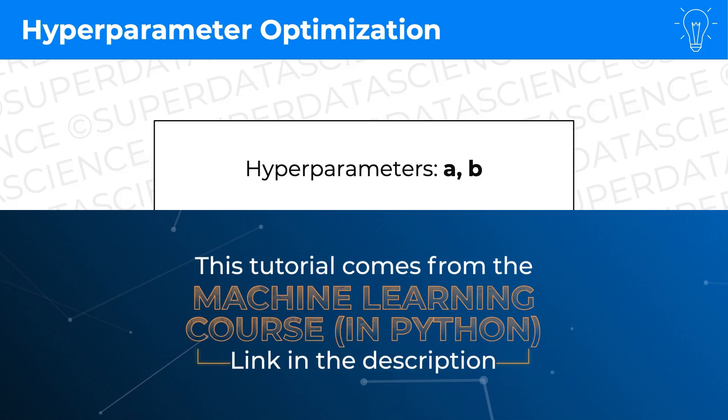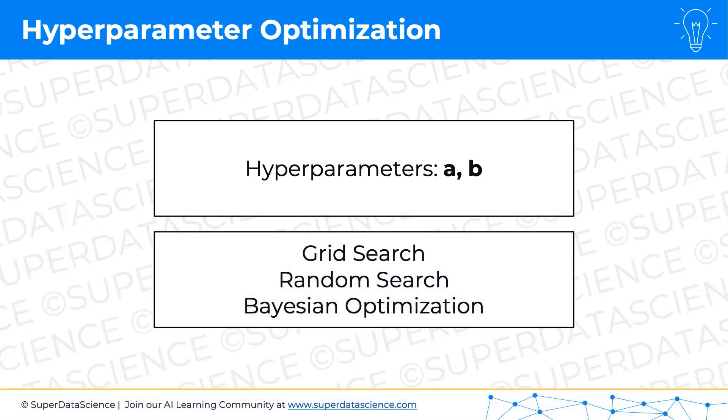We're going to look at three methods of optimizing them: Grid search, random search, and Bayesian optimization.